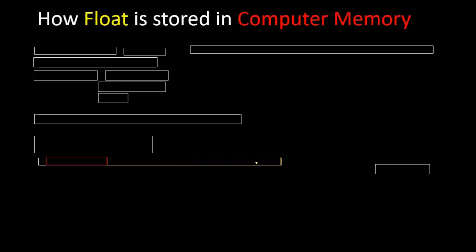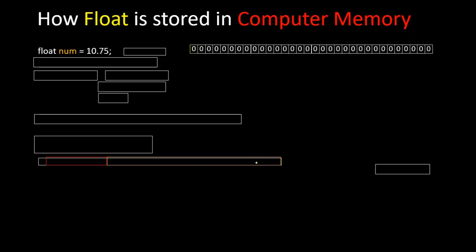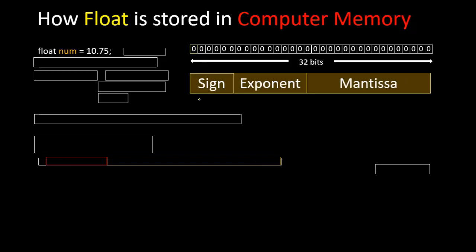Welcome back. In this video we're going to be talking about how float is stored in computer memory. To store a floating point number, four bytes of memory will be allocated. If we have a variable 'float num = 10.75', here we have 32 bits of memory space: one bit for sign, eight bits for exponent, and 23 bits for mantissa.